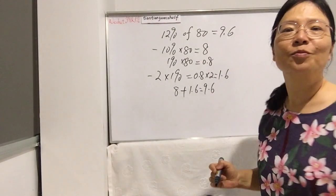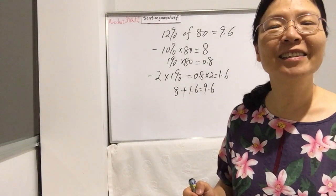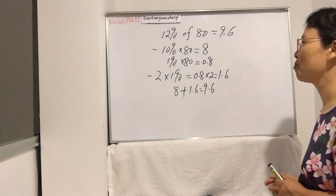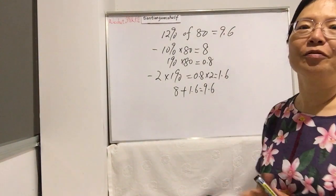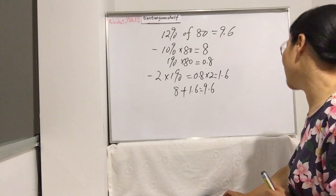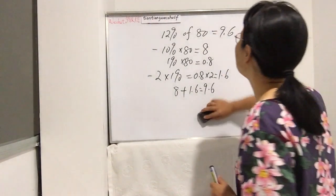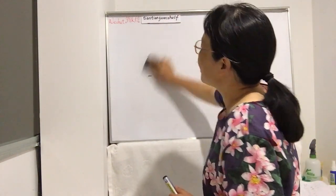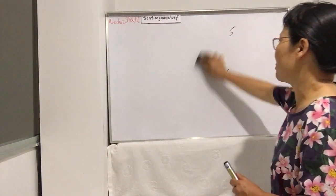So I change this to 8 plus 1.6 equals 9.6. So 12% of 80 is 9.6. Do you get the right answer? I hope you're right. This is one example.